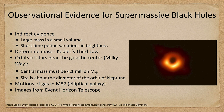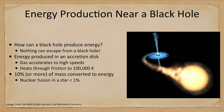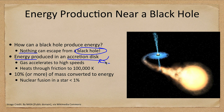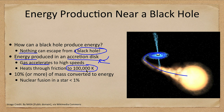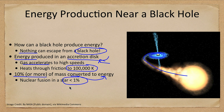So how does a black hole produce energy? Nothing escapes from a black hole itself. However, energy can be produced in an accretion disk around the black hole. As material from another star or other sources spirals into the black hole, it accelerates to very high speeds and heats through friction to 100,000 Kelvin, giving off energy in the form of X-rays. In fact, 10% or more of the mass is converted to energy — compared to nuclear fusion in a star, which is less than 1% efficiency, this gives off far more energy.